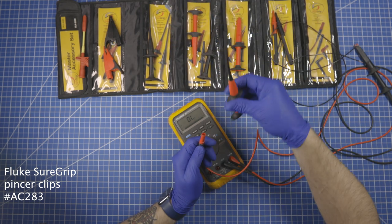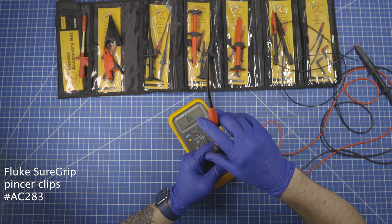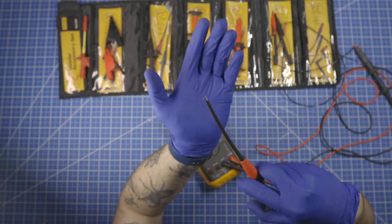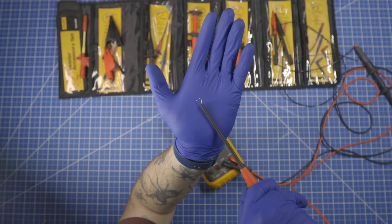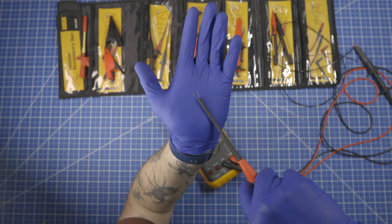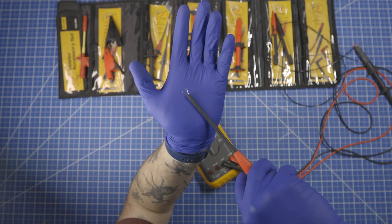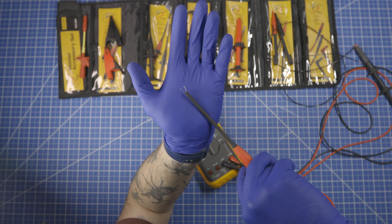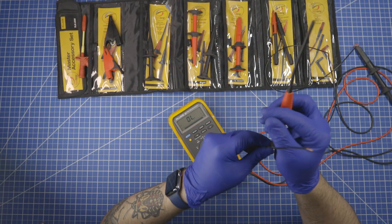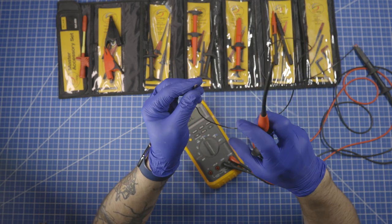Now these are a double jaw, very long reach. So as you can see, this flexible tip you can reach down into a very congested area where you need to test a circuit. Like inside of an appliance or whatever it is that you're working on.